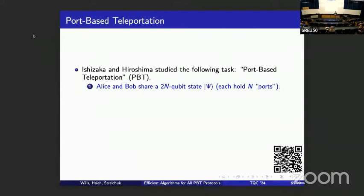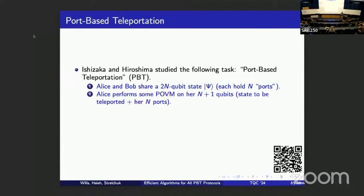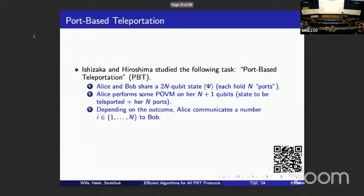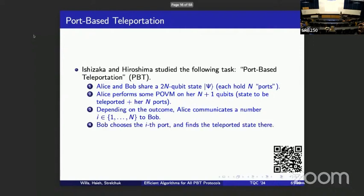Their idea replaces the standard steps. First, Alice and Bob share a 2n-qubit entangled resource state — they each hold n qubits, which we call their ports. Alice holds n ports, Bob holds n ports. Alice then performs a measurement on all her n+1 qubits — her n ports plus the one qubit to send — and we allow her to do any POVM.